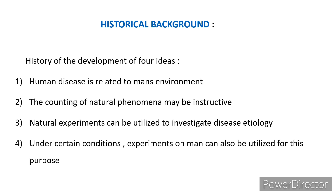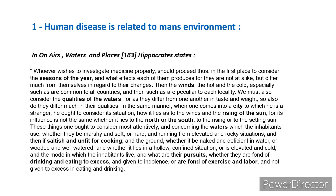Let's look into each idea briefly. The idea of linkage between human disease and man's environment was given by Hippocrates around 2400 years ago. In his statement he considered all environmental factors like the seasons of the year, winds, qualities of the waters, the city, the rising of the sun, the directions north or south, the nature of water whether it is saltish and unfit for cooking, and also the pursuits — whether people are fond of drinking and eating to excess.